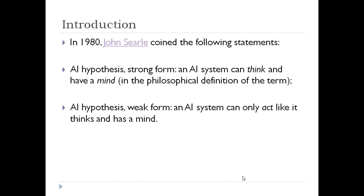In 1980, John Searle coined these specific terms — some statements regarding the AI hypothesis in terms of strong form and weak form. In the strong form, it states that an artificial intelligence system can think and have a mind. So if you are thinking about a machine that actually has some mind, that actually has some capability of thinking, in that case we will say that is the strong form of artificial intelligence.